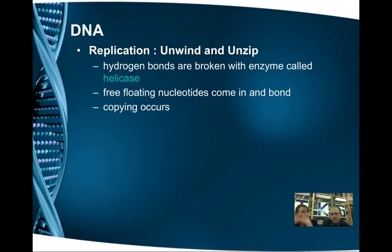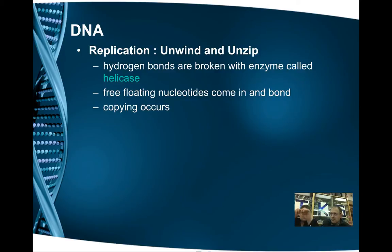Inside the nucleus, there are free-floating nucleotides. Remember, a nucleotide is a sugar, phosphate, and base — a little building block. They're floating around, and when they see an opening because we've unzipped those base pairs, if there's a T, it needs an A. One of those free-floating nucleotides can come in and bond with it, and we can start building two strands of DNA from the single one.